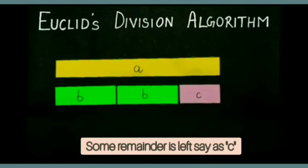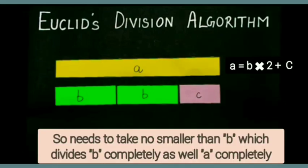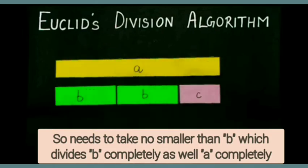Some remainder is left that is called as C. Now, need to take number smaller than B which divides B completely as well as A completely.